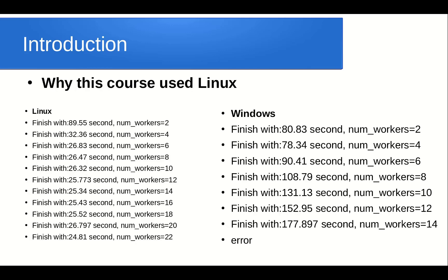This course uses Linux. In an experiment loading data from CPU using different numbers of processors: with 2 processors it takes 89 seconds on Linux and 80 seconds on Windows; but with 16 processors, it takes only 25 seconds on Linux versus 177 seconds on Windows — on the same dataset and same PC. Increasing processors in Linux reduces computation time, but in Windows it increases, because Windows does not easily support multiprocessing in PyTorch.